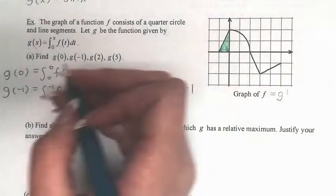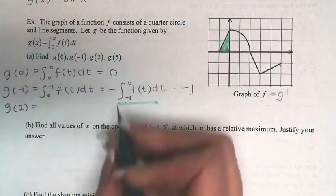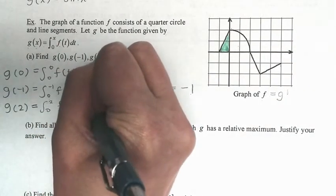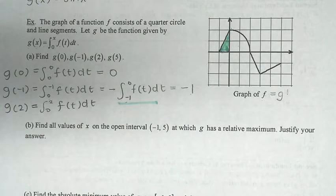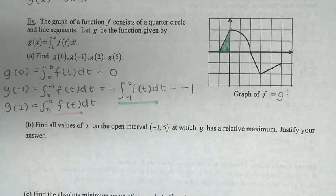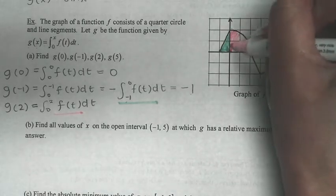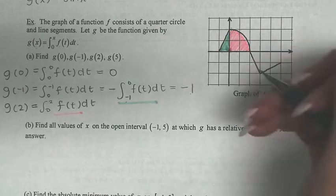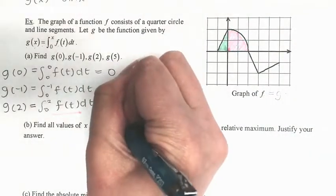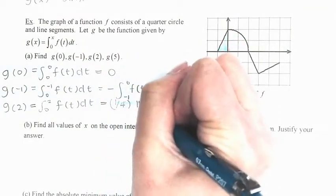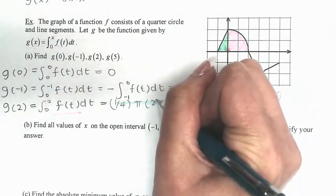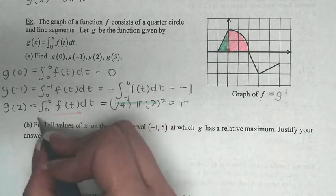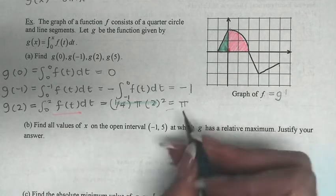For g(2), we have the integral from 0 to 2 of f(t) dt. Looking at the graph from 0 to 2, we see a quarter circle. The area of a quarter circle is ¼πr². The radius is 2, so ¼ × π × 4 = π. Since the region is above the x-axis and we didn't flip the integral, g(2) = π.